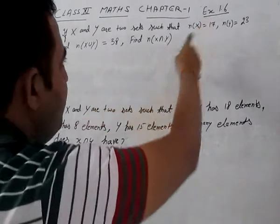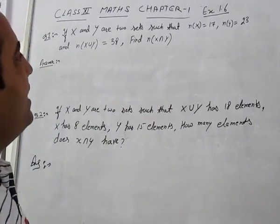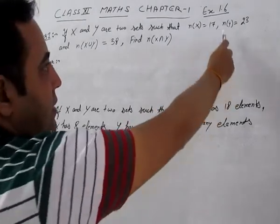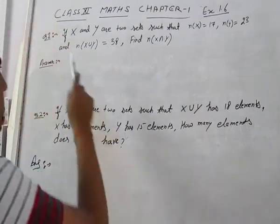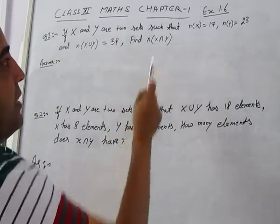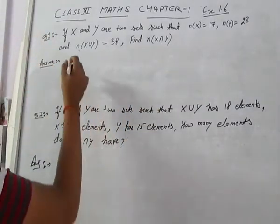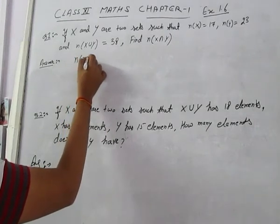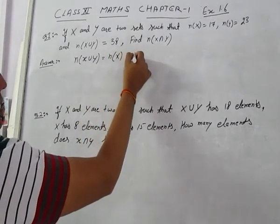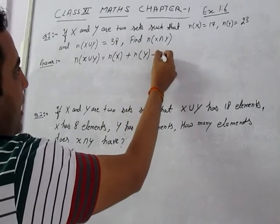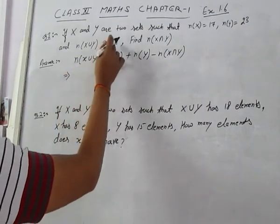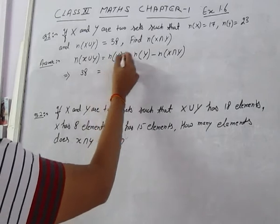Exercise 1.6, question number 1. If X and Y are two sets such that number of elements in X is 17, number of elements in Y is 23, and number of elements in X union Y is 38, find number of elements in X intersection Y. We know the formula: n(X∪Y) = n(X) + n(Y) - n(X∩Y). Putting all the values: X union Y is 38, X is 17, Y is 23, minus n(X∩Y).